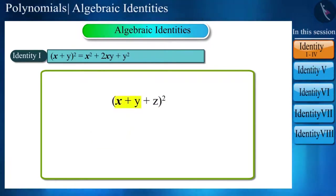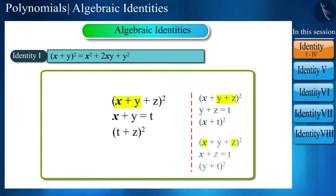Here, if we assume x plus y as t, then this trinomial identity can once again be seen as a binomial identity. You can also assume y plus z or x plus z as t. Our goal is to convert it from a trinomial to a binomial.